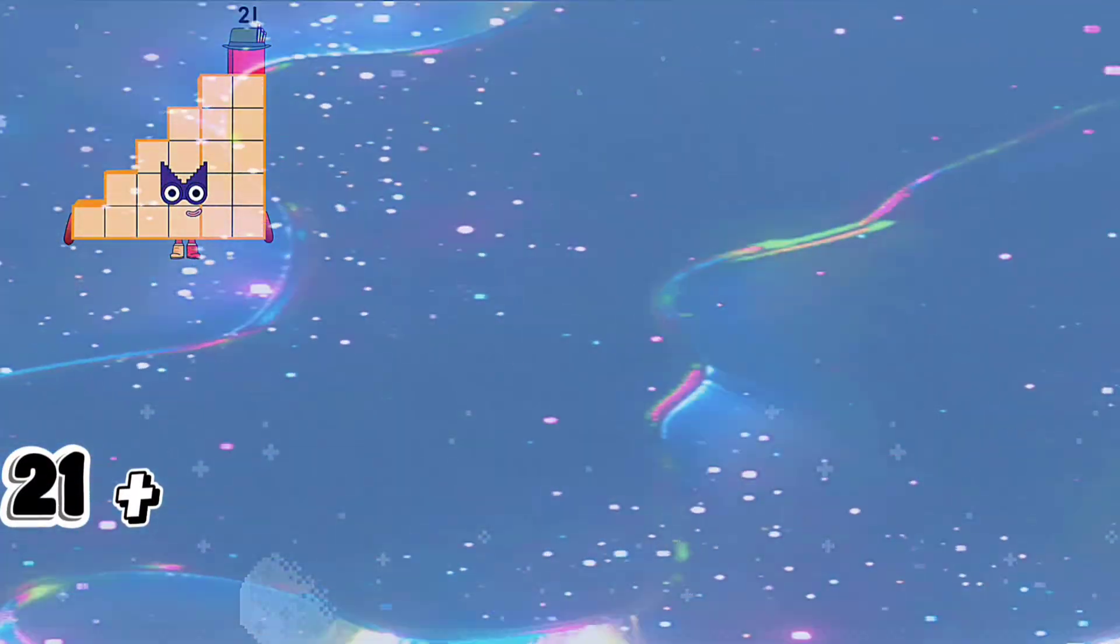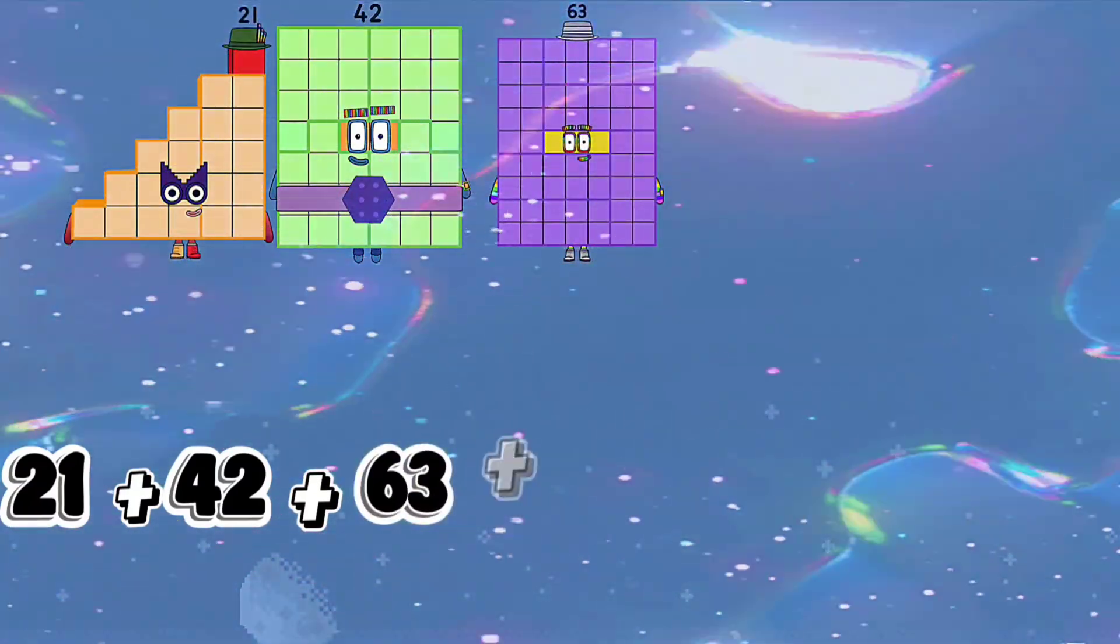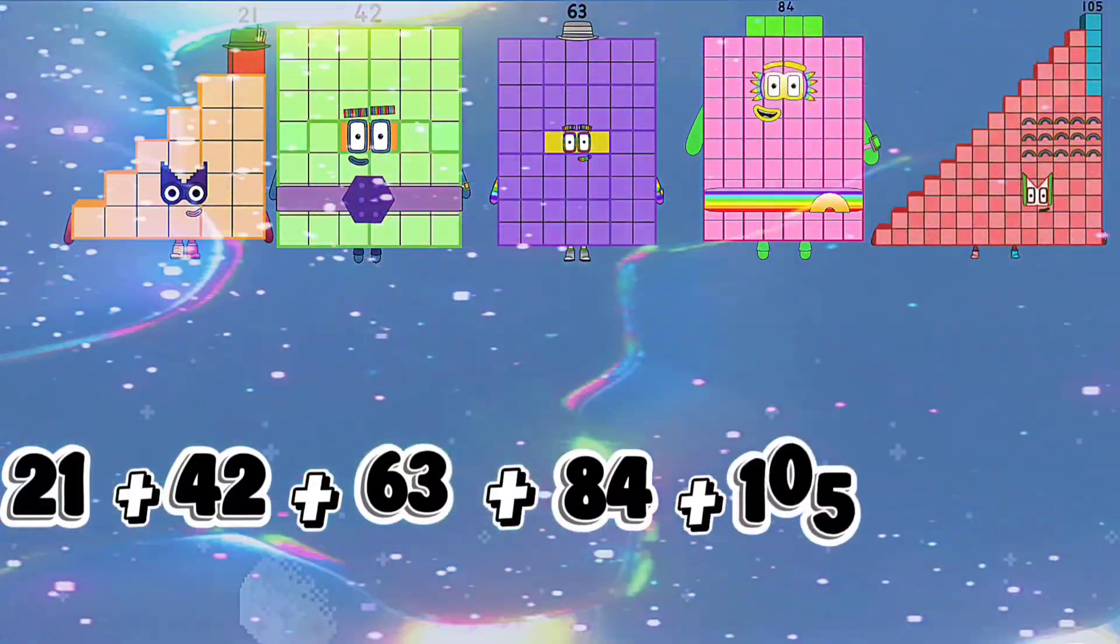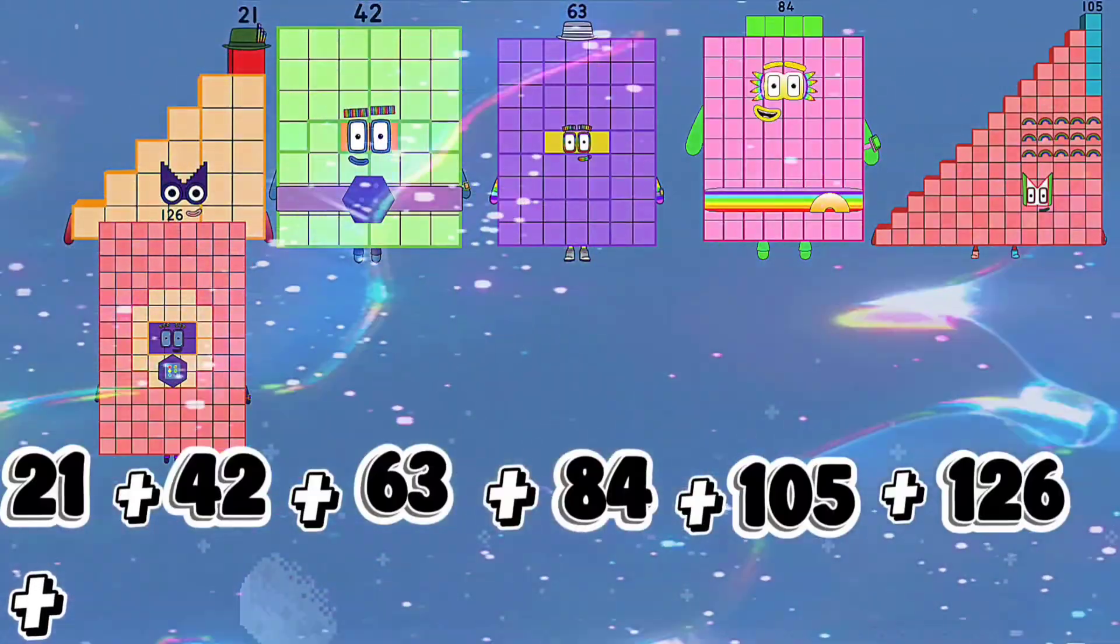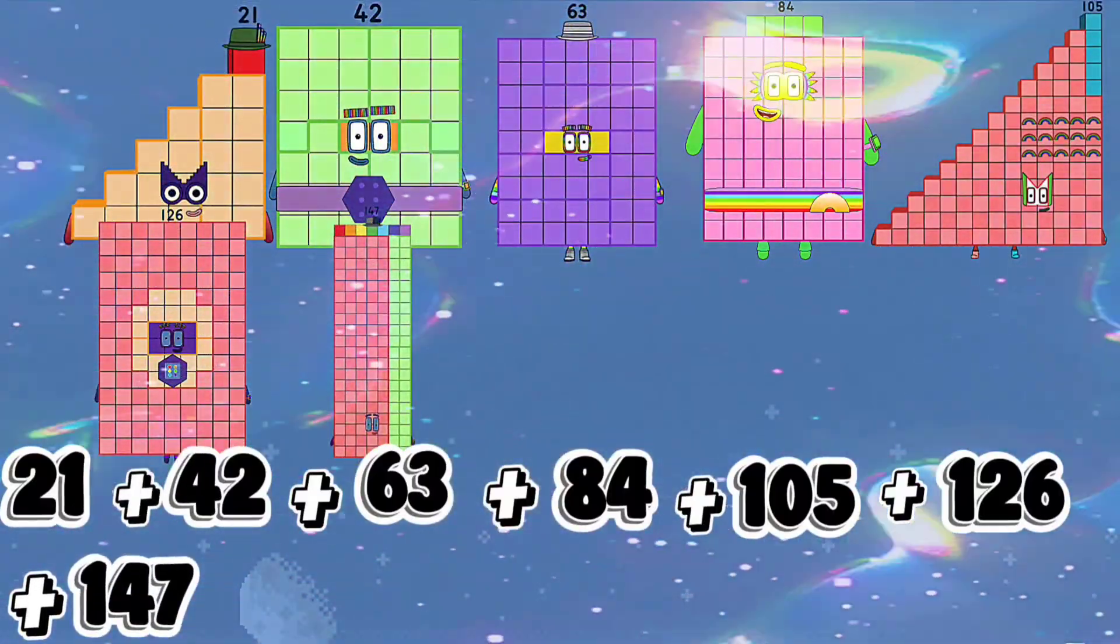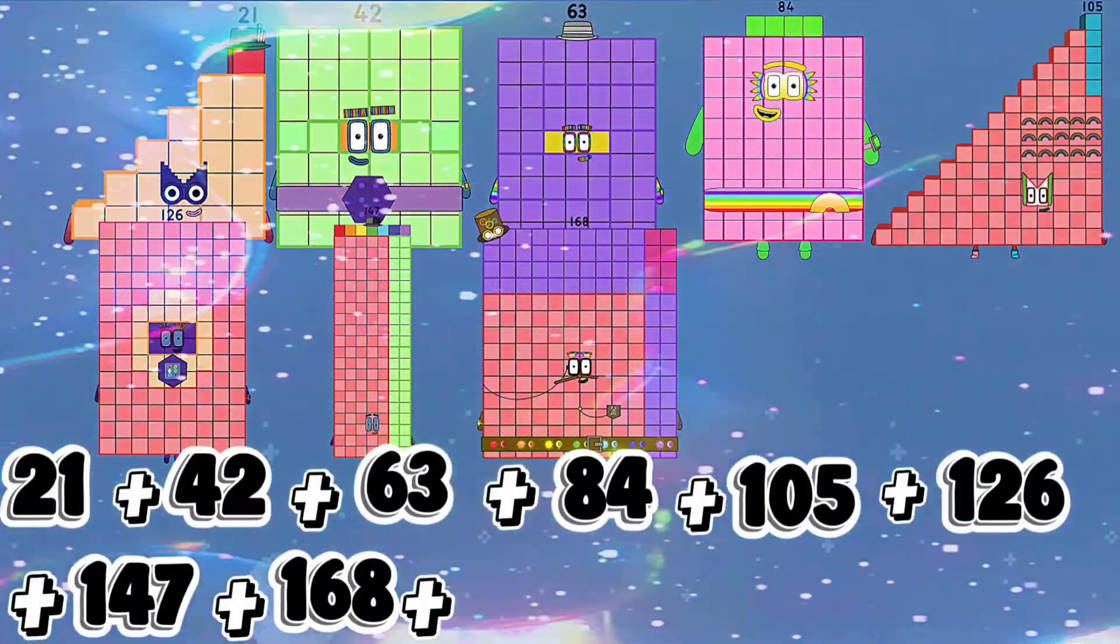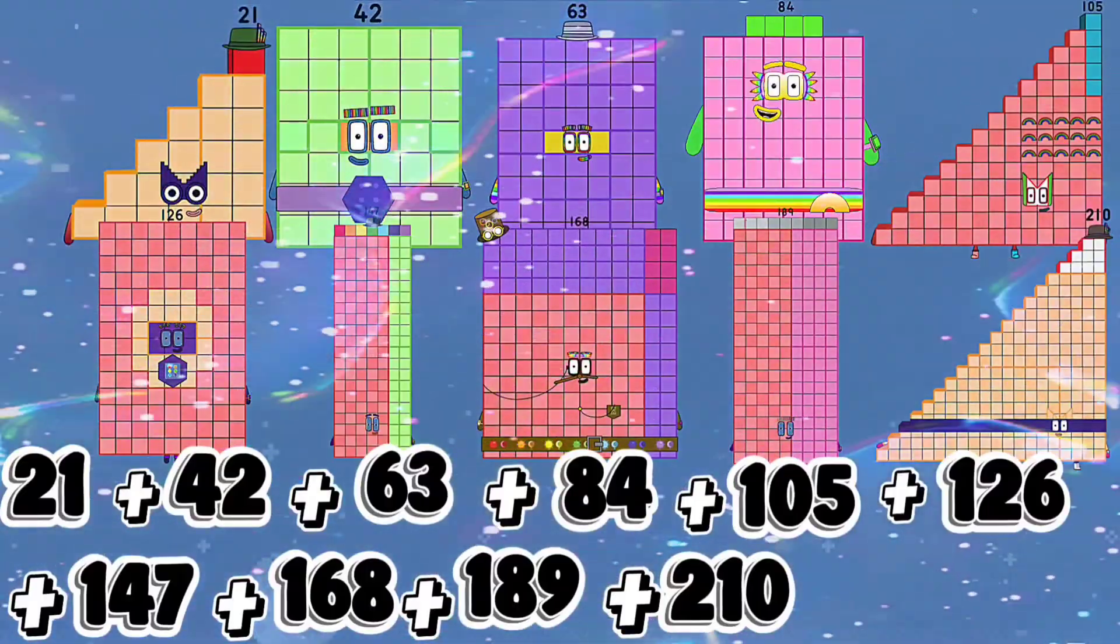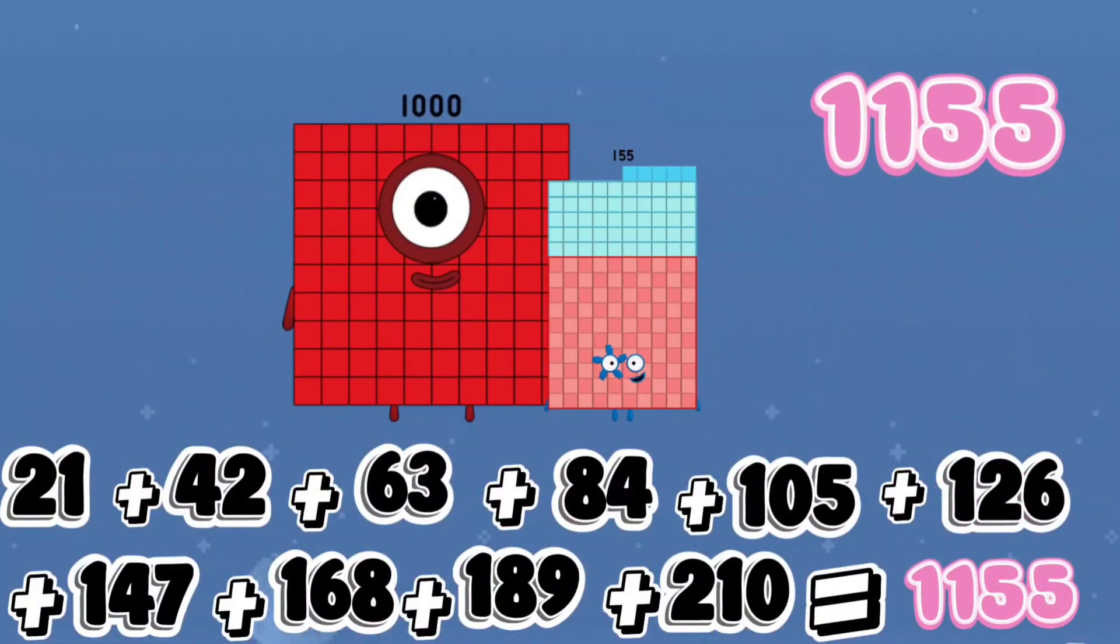1100. 21 plus 42 plus 63 plus 84 plus 105 plus 126 plus 147 plus 168 plus 189 plus 210 equals 1155.